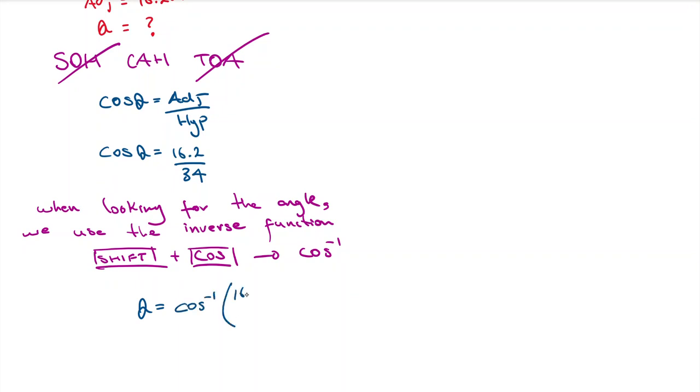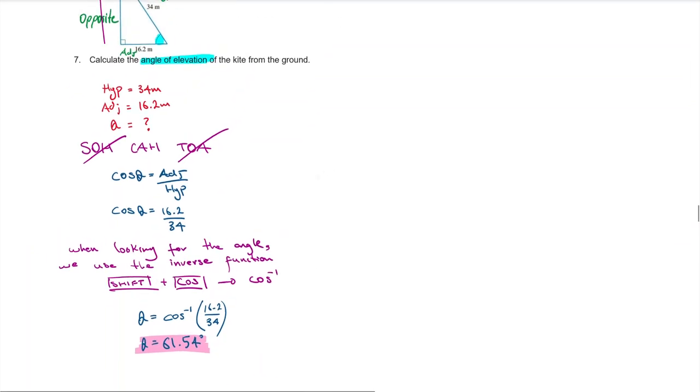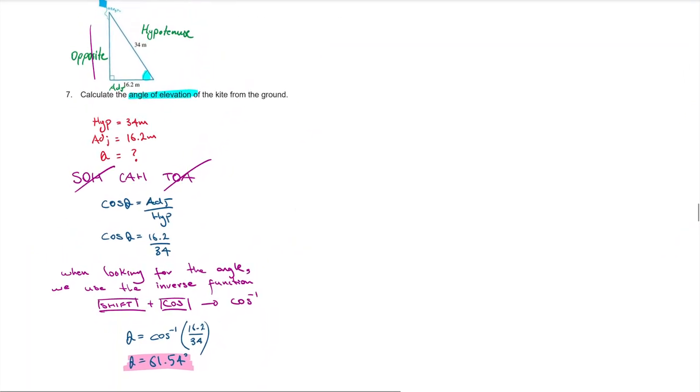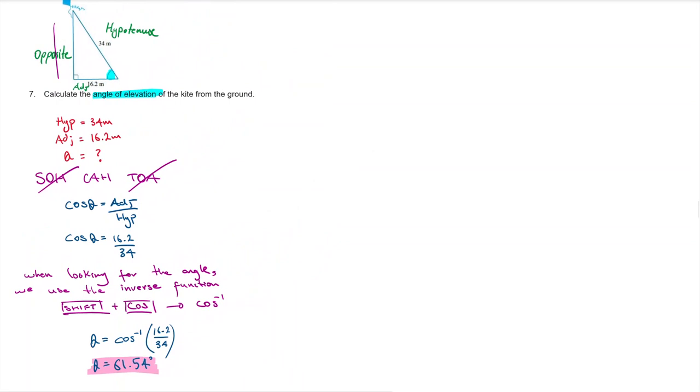Shift cos of 16.2 divided by 34, and I will find out what my angle is. I get 61.54 degrees. That's my final answer. So the angle of elevation of the kite from the ground is 61.54 degrees.